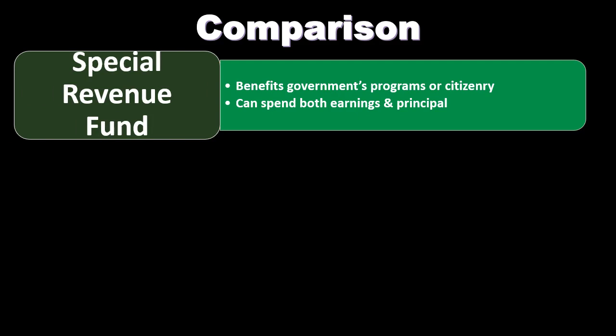We can compare fiduciary funds to some governmental funds — for example, the special revenue fund. The special revenue fund is a governmental type fund, and we could get some confusion as to what's a special revenue fund versus a fiduciary trust fund. The special revenue fund is not a fiduciary fund; it benefits the government's programs and citizenry. You can't spend both earnings and principal — there are restrictions on the special revenue fund.